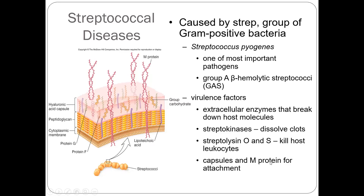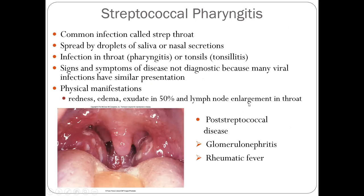They have an M capsule and M protein for attachment, making it very invasive. Because of the M protein, we can differentiate streptococci into Group A, Group B, and Group D. The very typical symptom is strep throat — pharyngitis or tonsillitis. It spreads by droplets, secretions, and nasal secretions. Early on there is redness, then lymph node enlargement in the throat. Even after recovery, patients can develop glomerulonephritis and rheumatic fever.